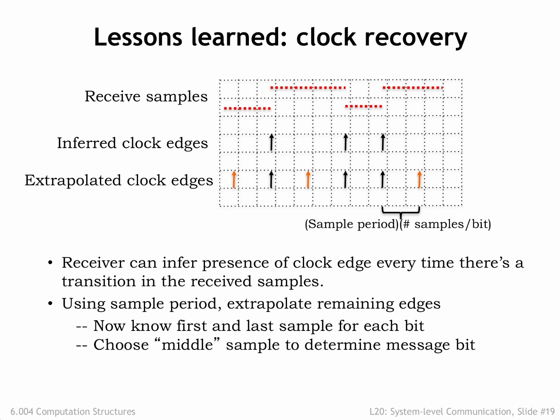The receiver uses any received transitions to correct the phase and period of the local clock. The transmitter adds a training sequence of bits at the front of the packet to ensure that the receiver's phase-locked loop is properly synchronized before the packet data itself is transmitted. A unique bit sequence is used to separate the training signal from the packet data.